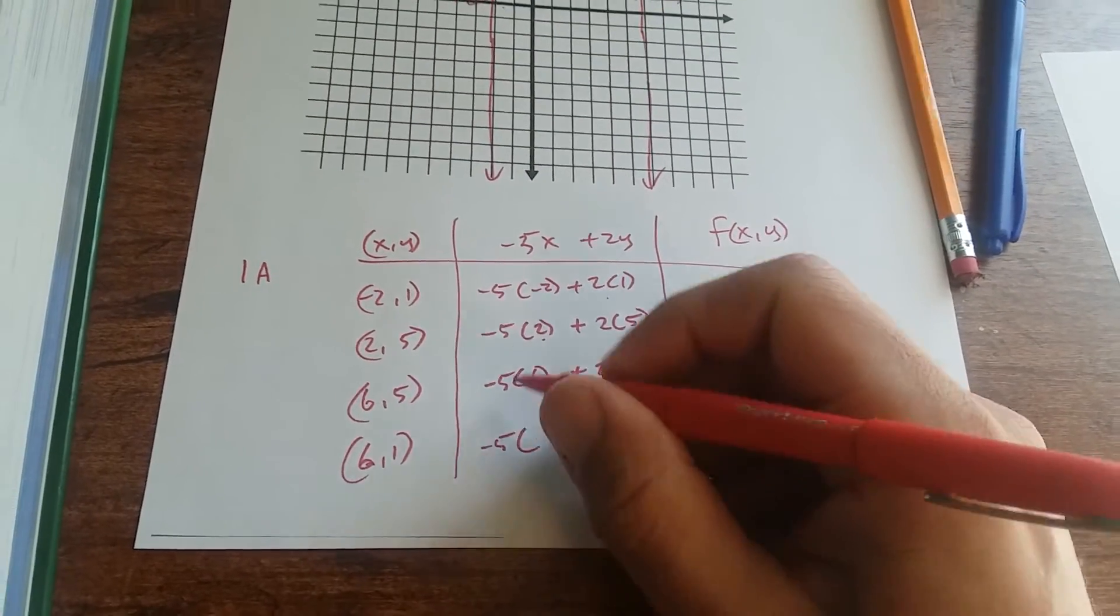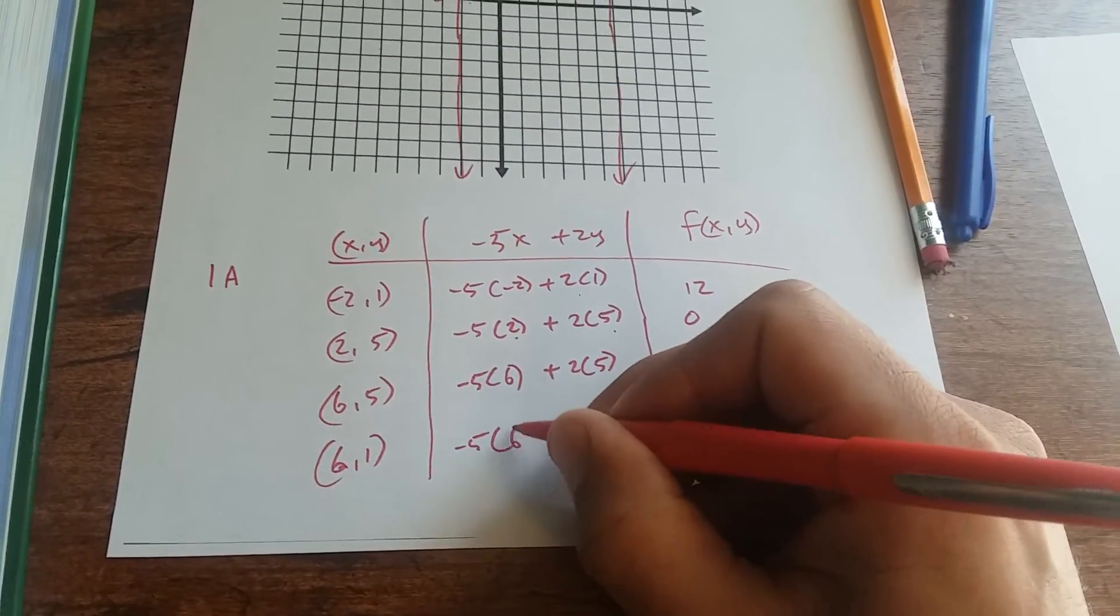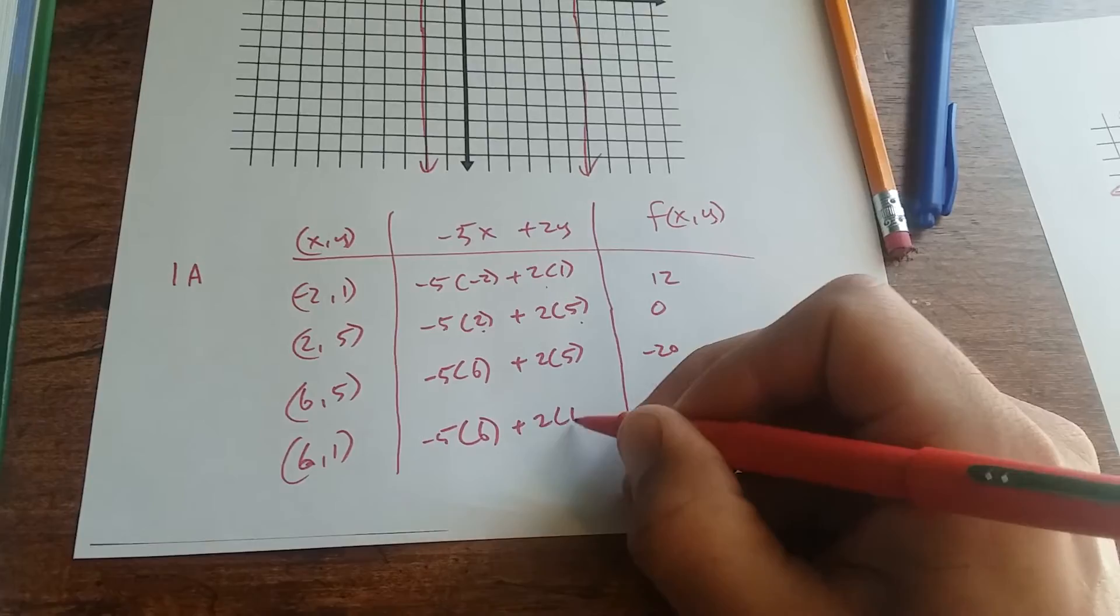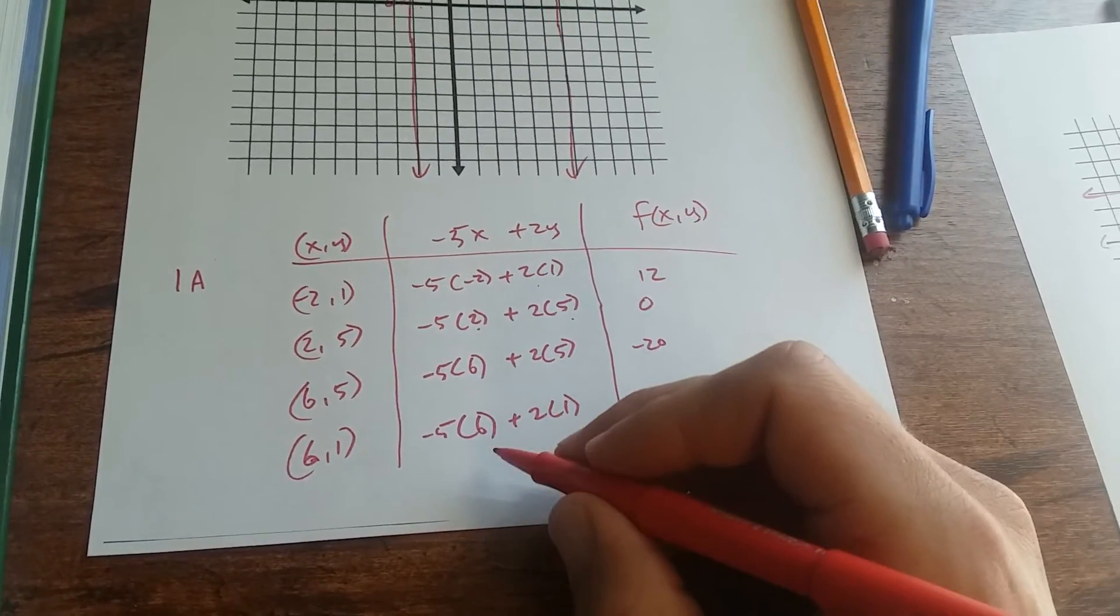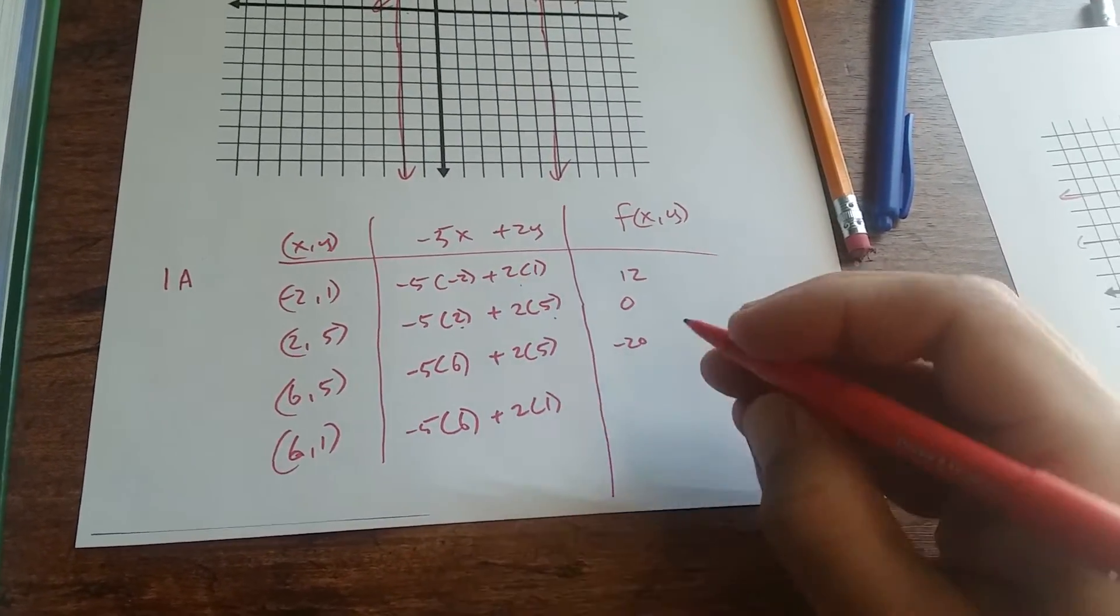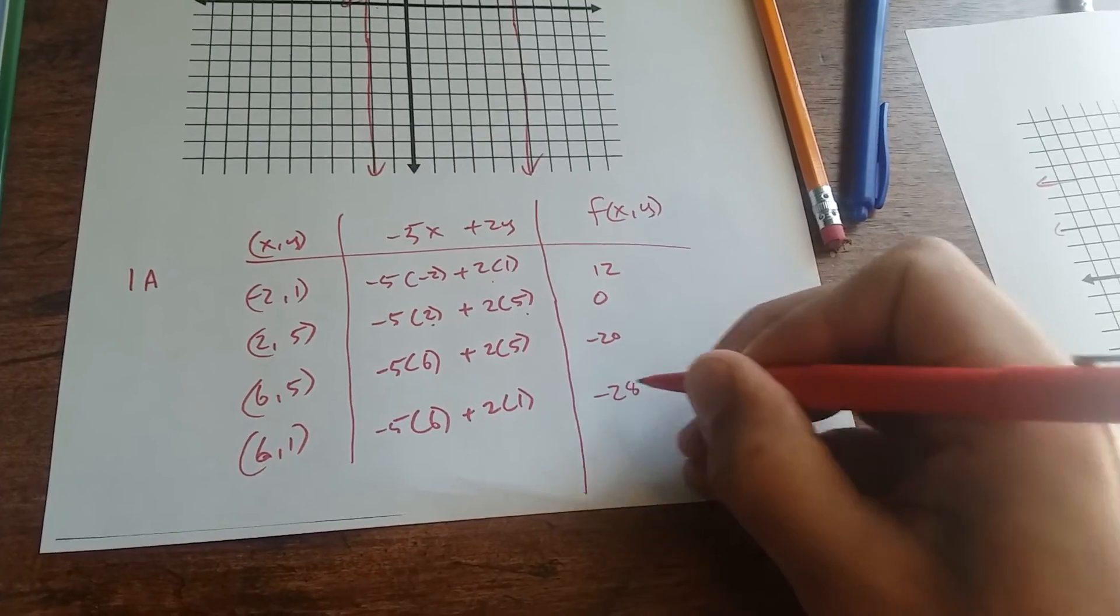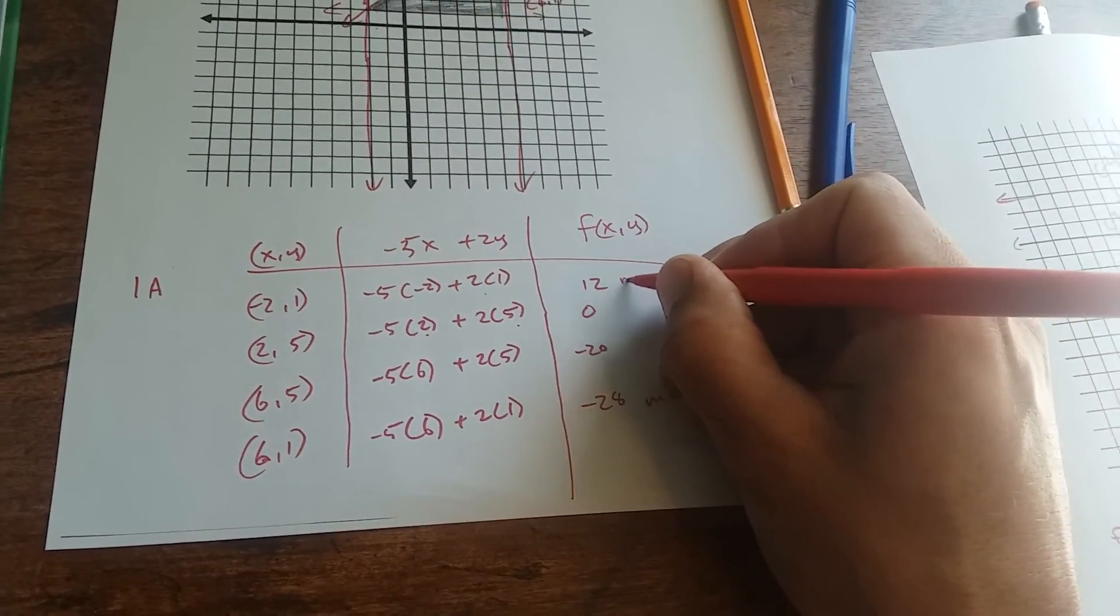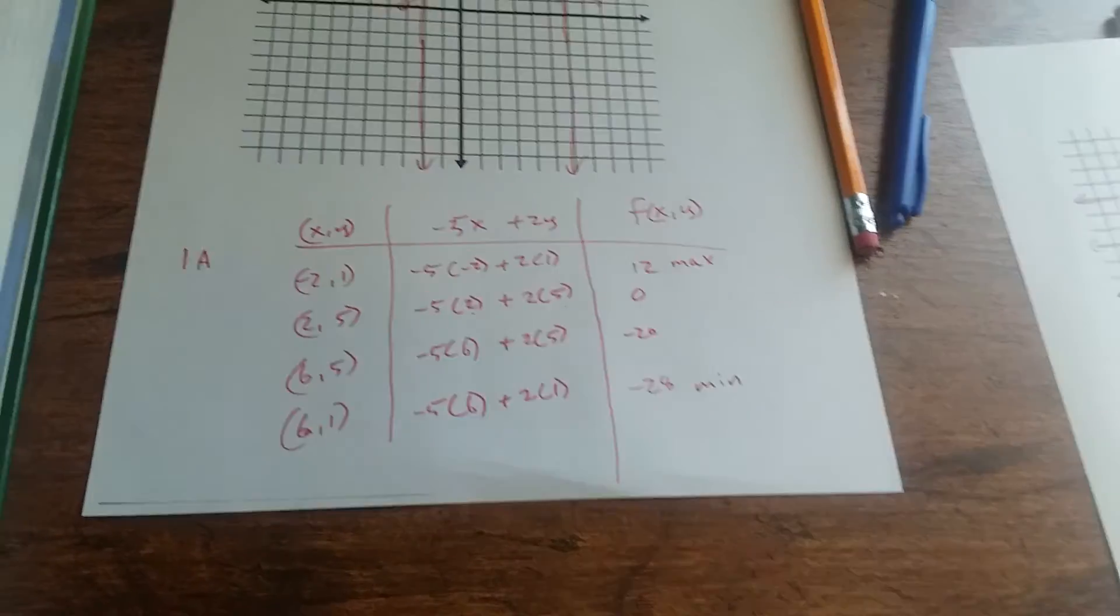You have negative 5 times 6 plus 2 times 1. Negative 30 plus 2 is negative 28. So this is your min and this is your max. That's how it's done.